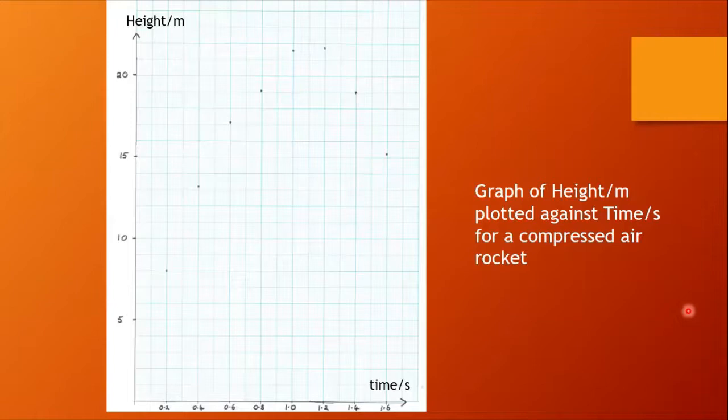So here's my graph of height plotted against time for a compressed air rocket. Okay now before we move on, notice we need some kind of estimate of the maximum height. We're also going to need a calculation of the initial velocity, and of course that would involve the gradient of this first part of the graph.